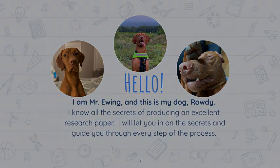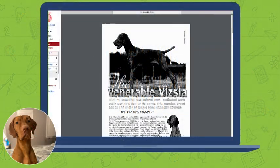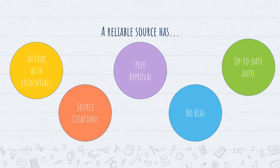I'm going to guide you through the process in this lesson of how to identify reliable sources. My dog Rowdy is a Vizsla, so he's inspired this lesson with the article we'll use to go through the characteristics of a reliable source. A reliable source has five characteristics: an author with credentials, source citations, peer approval, no bias, and up-to-date info.